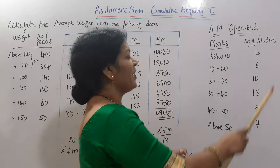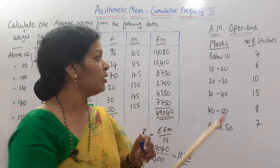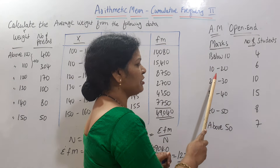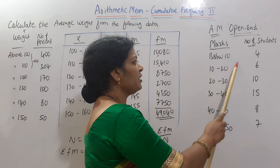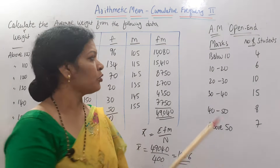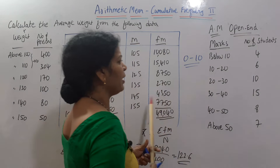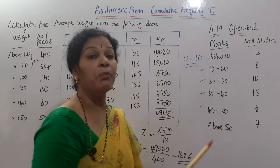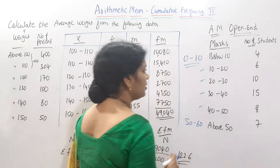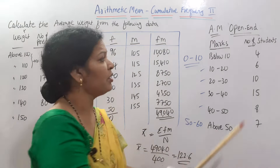Now for homework: this problem involves open-end class intervals — 'below 10' at the start and 'above 50' at the end are open. The rest — 10 to 20, 20 to 30, 30 to 40, 40 to 50 — are clear. For 'below 10', subtract 10, giving 0 to 10. For 'above 50', add 10, giving 50 to 60. Only these two intervals need rearranging; the rest stay as they are. Since it is an open-end type, frequency order is normal — don't change it.